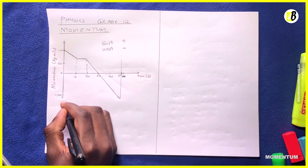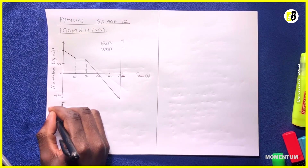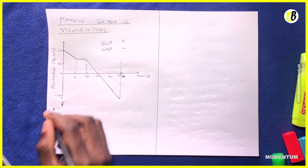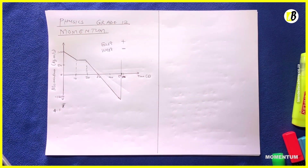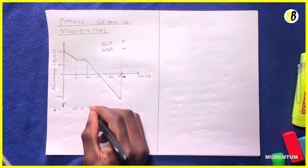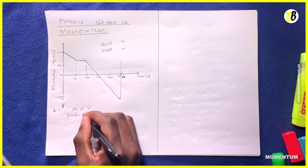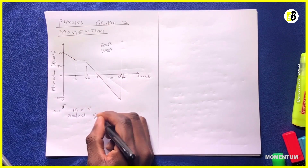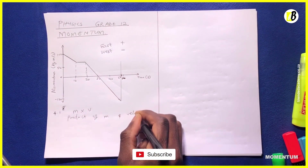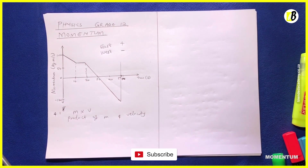We need to define momentum. Remember from our previous video — momentum is the product of mass and velocity. So that's the product of mass and velocity; that's our momentum.